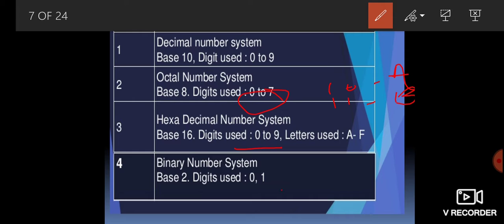The binary number system has base 2, because binary means 2. Its base is 2 and the digits used are 0 and 1.